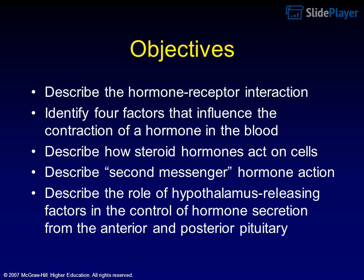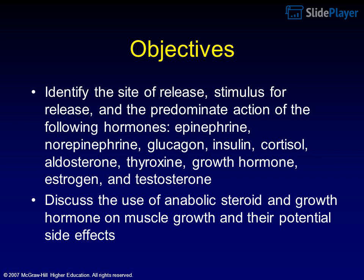Objectives: Describe the hormone-receptor interaction. Identify four factors that influence the concentration of a hormone in the blood. Describe how steroid hormones act on cells. Describe second messenger hormone action. Describe the role of hypothalamus-releasing factors in the control of hormone secretion from the anterior and posterior pituitary.